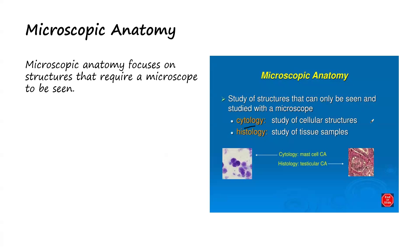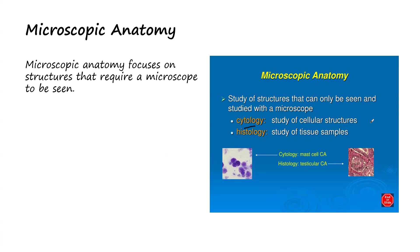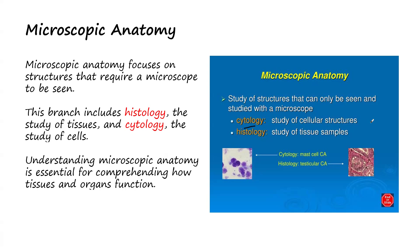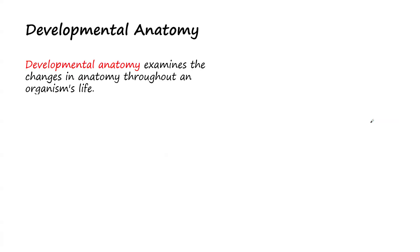Microscopic anatomy is divided into two branches. First, we have cytology, which is the study of cellular structures — cells cannot be seen with the naked eye except when you use a microscope. The second branch is histology, which is the study of tissue samples. Understanding microscopic anatomy is essential for comprehending how tissues and organs function.